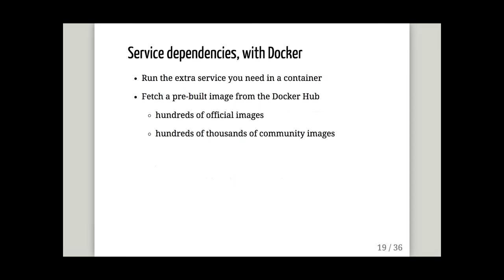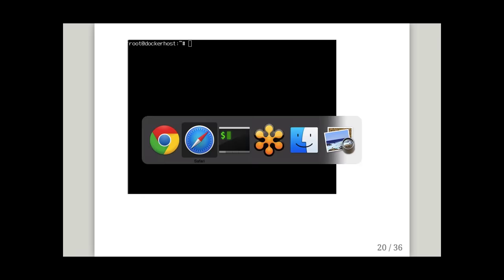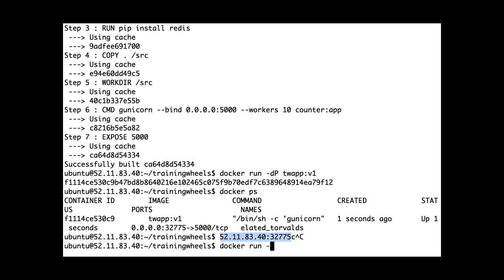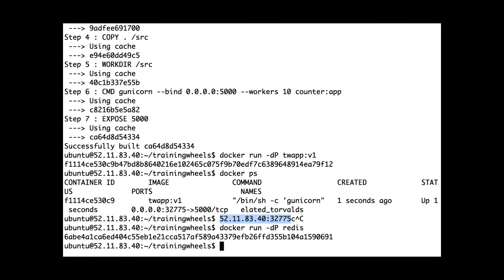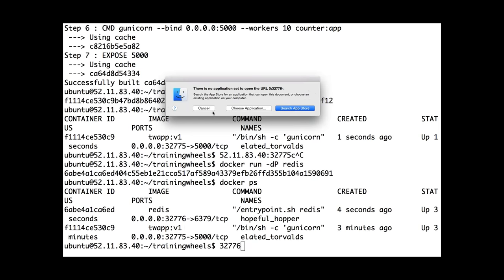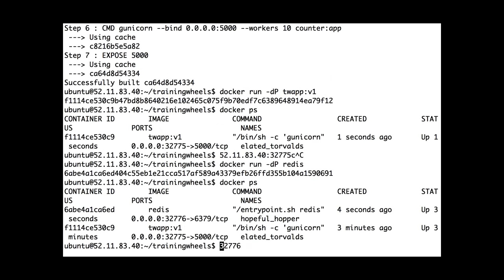In the Docker age, if I need an extra service I can run it in a container — super easy — and fetch a pre-built image from Docker Hub. Docker Hub is a publicly available library of container images with hundreds of official images, like a Redis image approved by the Redis maintainers, and hundreds of thousands of community images. So I'll just run Redis in a container. Then I'll change the application code to use it.